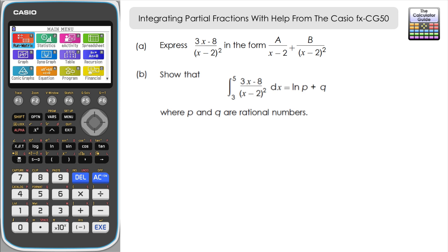Let's take a look at the question. For part A, we need to express (3x − 8) over (x − 2)² in partial fraction form: A over (x − 2) plus B over (x − 2)². For part B, we need to show that the integral between 5 and 3 of that expression with respect to x gives an answer in the form natural log p plus q, where p and q are rational numbers.